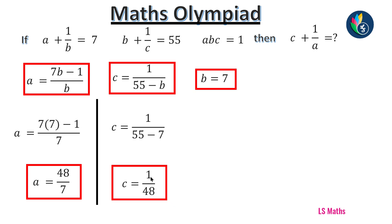Now we have A and C. The question asked is C plus 1 by A. We are going to find C plus 1 by A. C plus 1 by A equals, instead of C, I can put 1 by 48. 1 by A means 7 by 48. So we put like this: 1 by 48 plus 7 by 48. Now 48 is the LCM, so we get 8 by 48. We can simplify this further. 1 by 6. So C plus 1 by A equals 1 by 6. And that is the final answer.